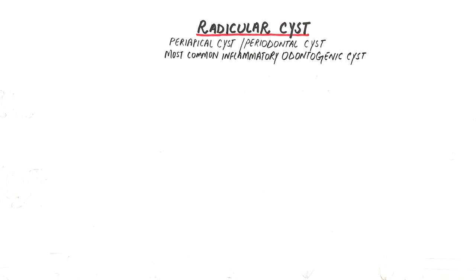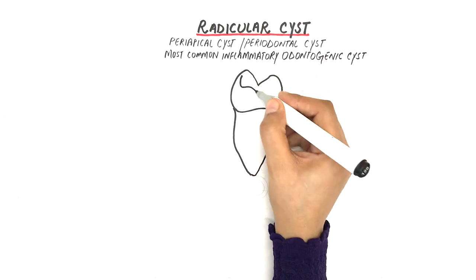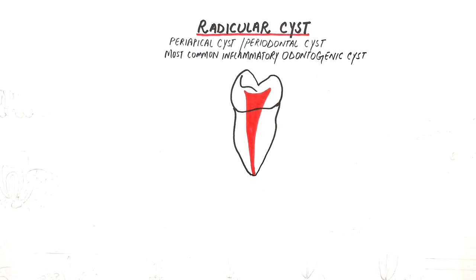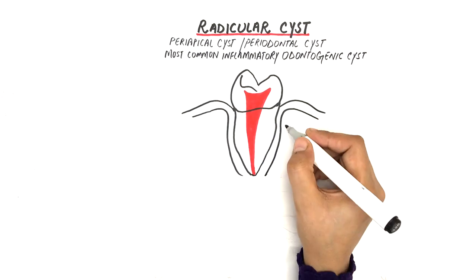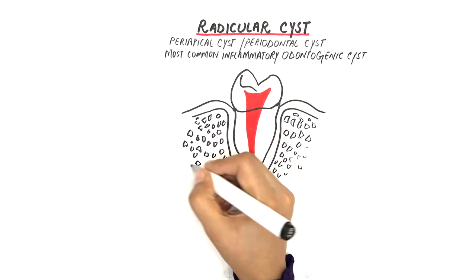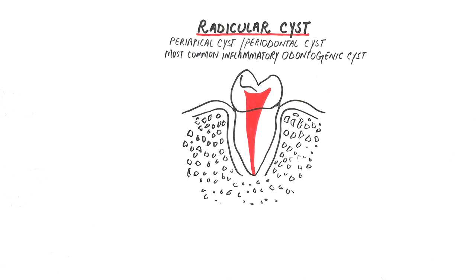By inflammatory odontogenic cyst, it simply means that the cyst arises as a result of progressive inflammation of the pulp of a tooth into its periapical area, which causes subsequent stimulation of some cells around the apex of a tooth.